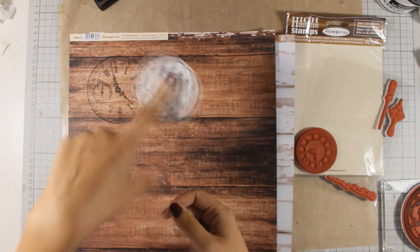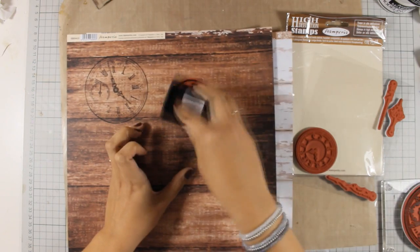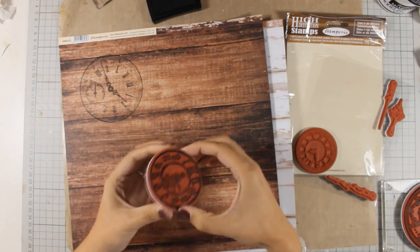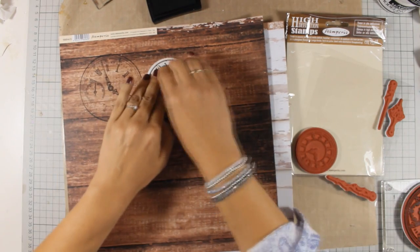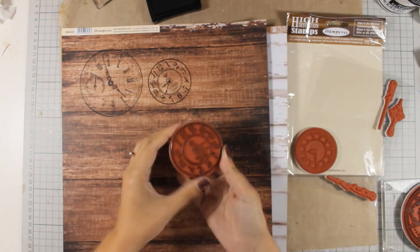Now I am going to stamp all three clocks and I love them because they are different sizes and they also have different designs on them. And then I am going to go ahead and use my scissors and cut them out.